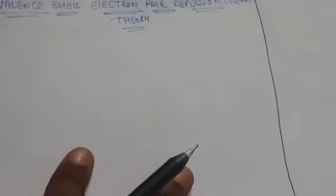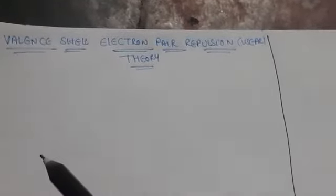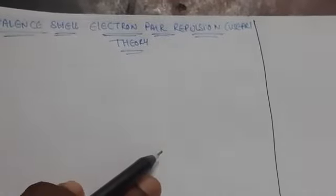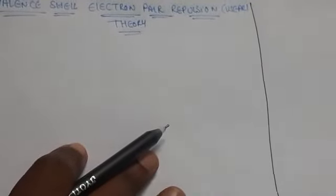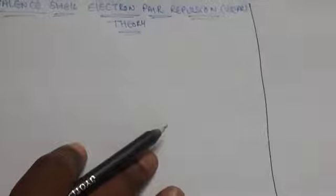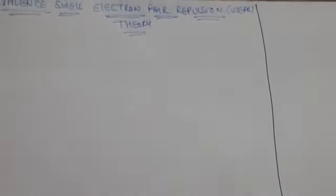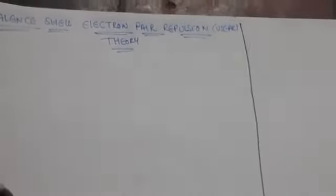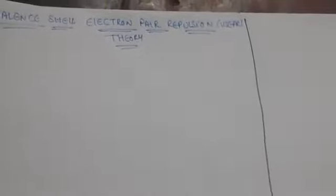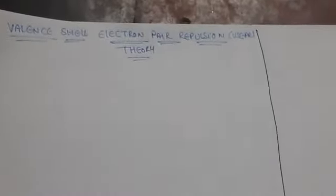Hello students. In the previous class we discussed about polarity of bond and dipole moment. Today I'm going to explain about Valence Shell Electron Pair Repulsion, that is VSEPR theory. According to Lewis concept, it is unable to explain the shape of molecules. To give the shape of covalent molecules, scientists proposed a simple theory. Sidgwick and Powell predicted the shape of covalent bonds, but further the shapes were developed by Nyholm and Gillespie.